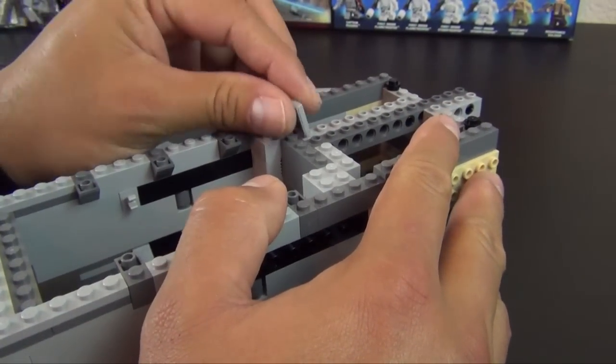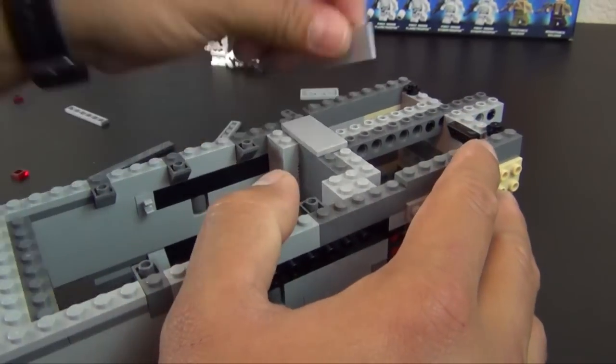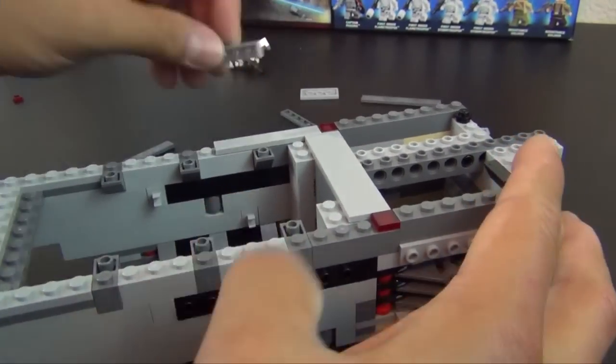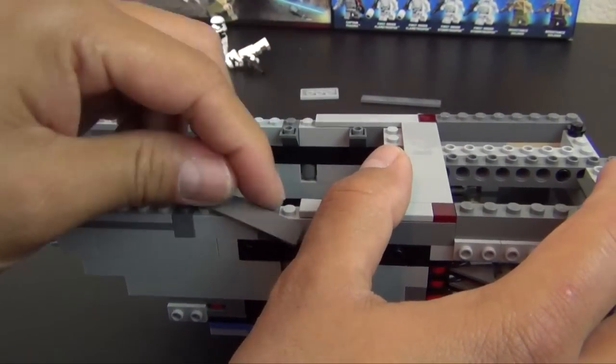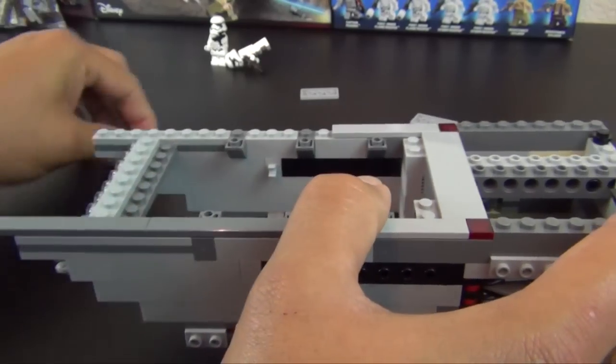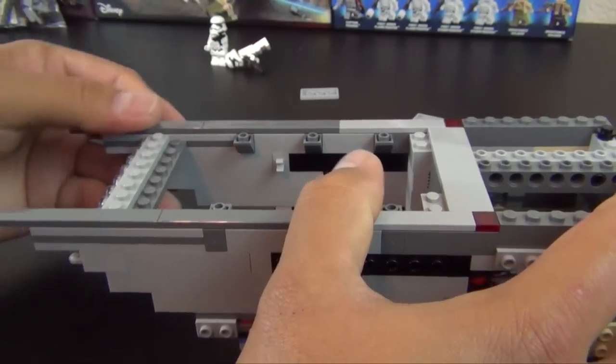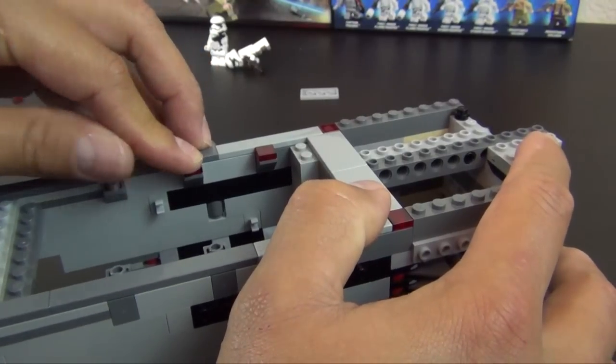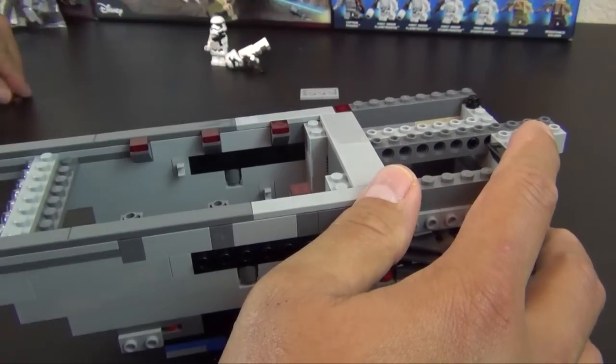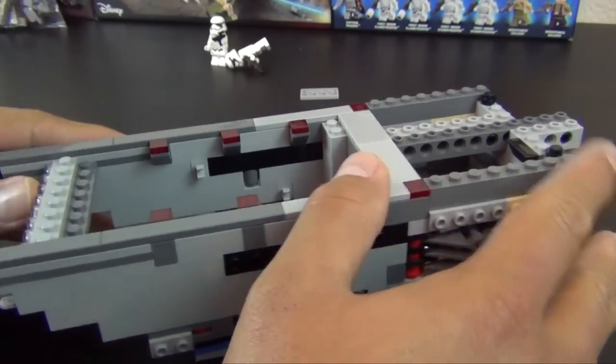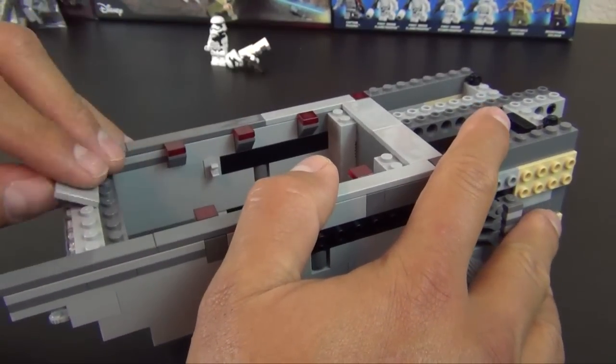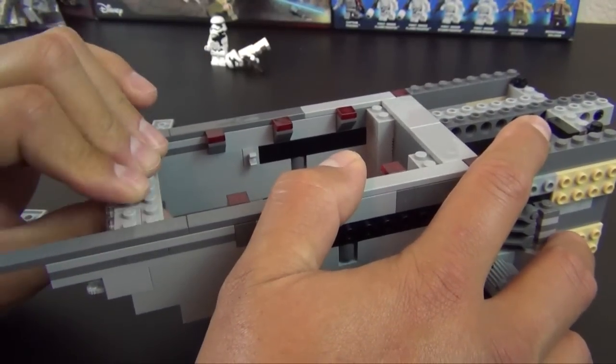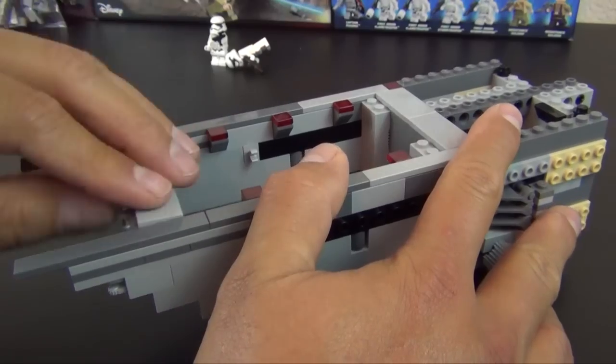Alright, now we're going to tile the rest of this up. Starting here, these large gray tiles, some trans-red. We've got gray, dark bluish gray. And on each one of these inverted slopes goes a trans-red one by one tile. And these two pieces. Oops, I forgot that plate goes there. I'll put the plate on first and then the tiles. Now we're cooking.